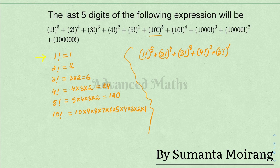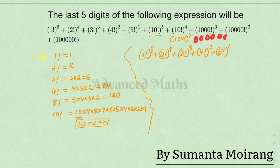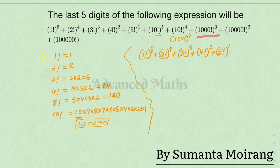100 factorial raised to some power — and 10 factorial obviously contributes trailing zeros. The power of five contributes compulsory zeros. 100 raised to any power gives zeros: zero, one, two, three, four — the compulsory zeros mean those terms contribute nothing to the last five digits.